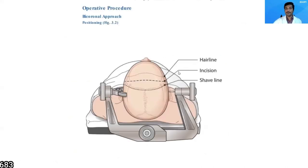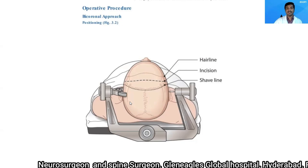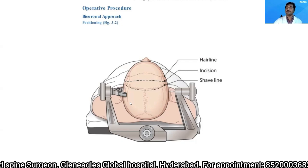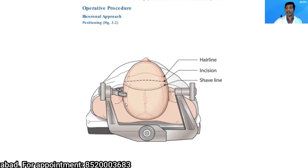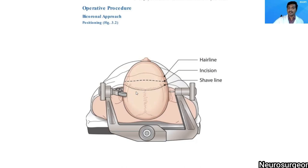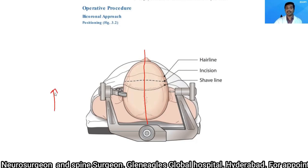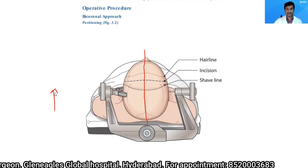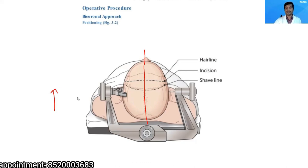For operative positioning, we fix the head. When planning a bicoronal technique, I prefer rigid immobilization in a three-pin headrest, though if time must be saved you can use a horseshoe headrest. The head is kept neutral in the midline and slightly elevated above heart level to ensure adequate venous return, decrease brain swelling, and reduce venous ooze.